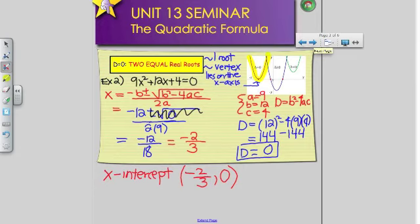Remember, you will be able to use graphing calculators on your test. So what I would do if I were you, I would do all my work, and then plug in 9x squared plus 12x plus 4 into your calculator, and double-check that this is, in fact, the x-intercept. So this is a very easy way of checking your answer to make sure you're going to get 100% on this test.